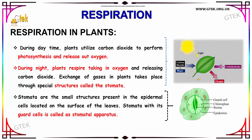The stomata is a small structure present in the epidermal cells, located on the surface of the leaf. Here you can see the small structure of the stomata. The stomata with its guard cells is called the stomatal apparatus. You can see here the guard cells and chloroplasts. This stomata is placed in the epidermis.